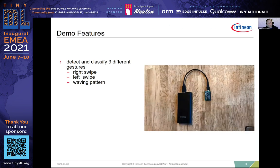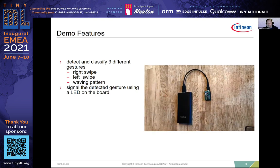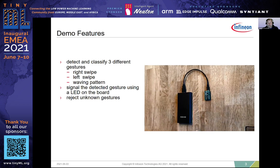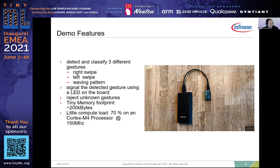This slide summarizes the functionality built into the demonstrator. As shown in the video sequence on the right, the demo can detect and classify three different hand gestures — just enough to navigate through a basic UI displayed on a screen. The detected gesture is signaled using the LED on the board. The algorithm can also reject unknown gestures to a certain extent. The whole application works on a total of 200 kilobytes of RAM, including buffers for raw data, pre-processing results, neural network arena, and neural network weights. The application uses 70% of compute time on the Cortex-M4 microcontroller running at 150 MHz, and classification accuracy in the presence of unknown gestures is around 90%.